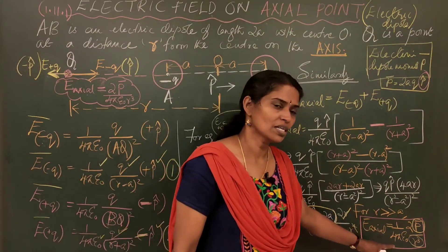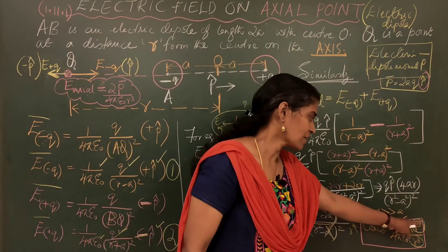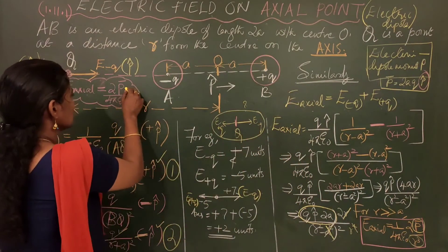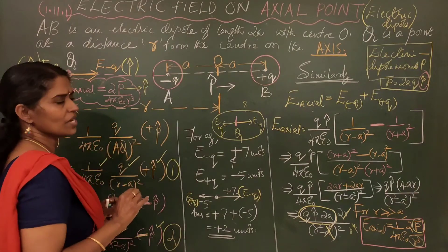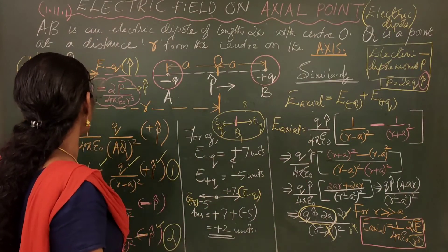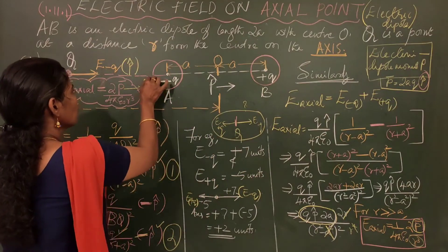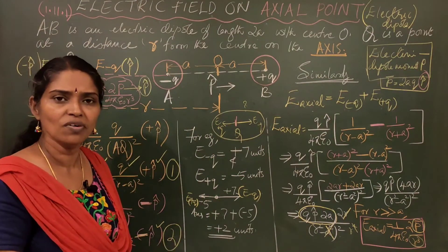So, what's the answer? 1 by 4 pi epsilon 0, 2P bar. Don't forget the P bar. P bar. P bar by R cube. And what P bar shows? This P bar shows that P cap. What is P cap? Electric field is towards right. So, at the point Q, the electric field is in the direction of P bar. Electric field is in the direction of P bar.